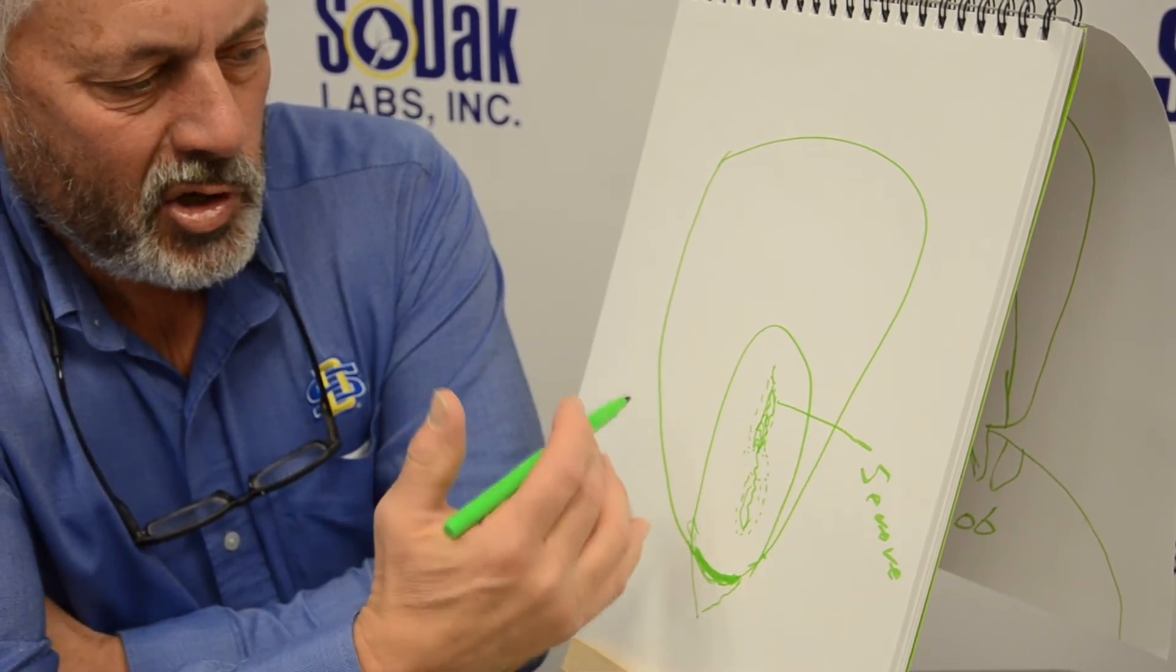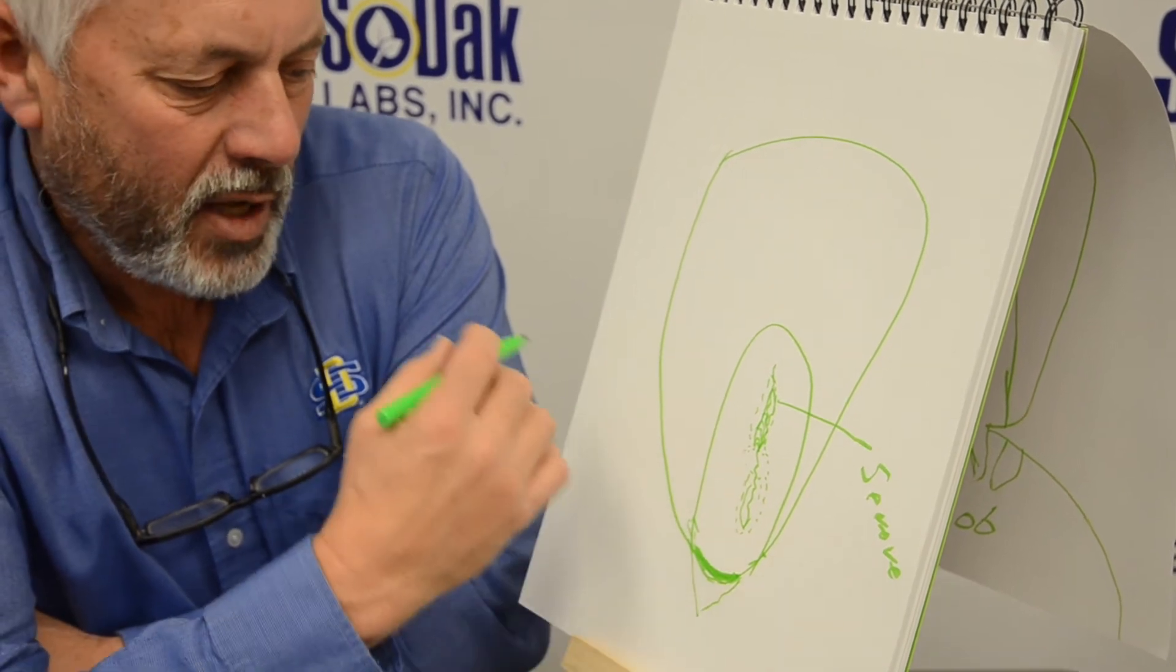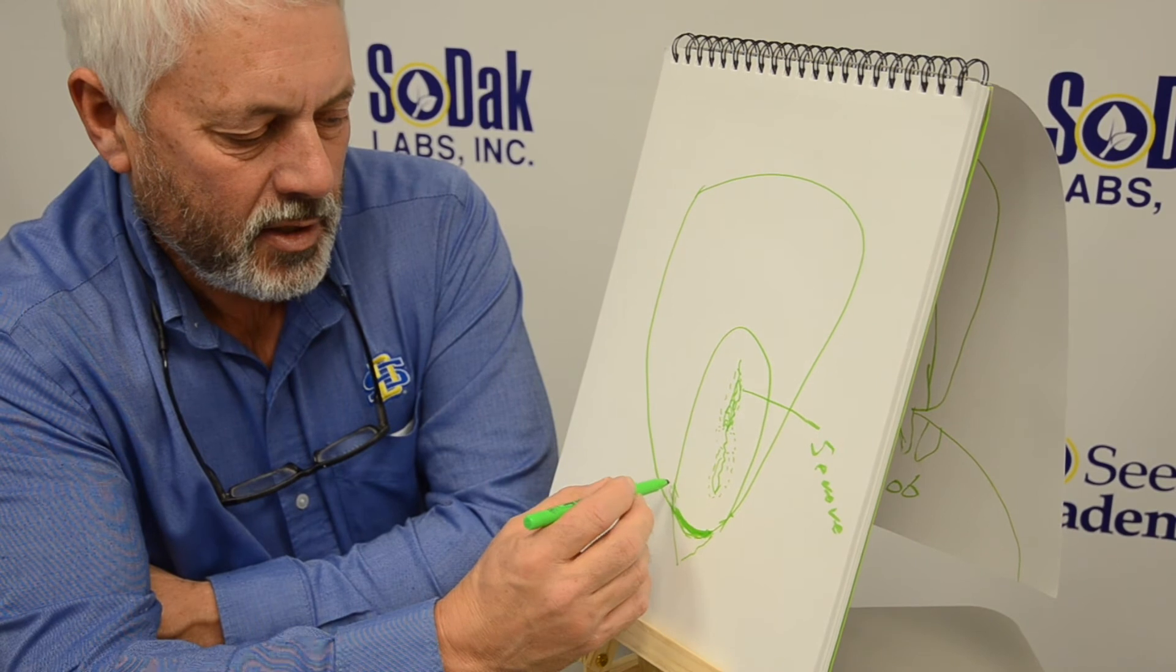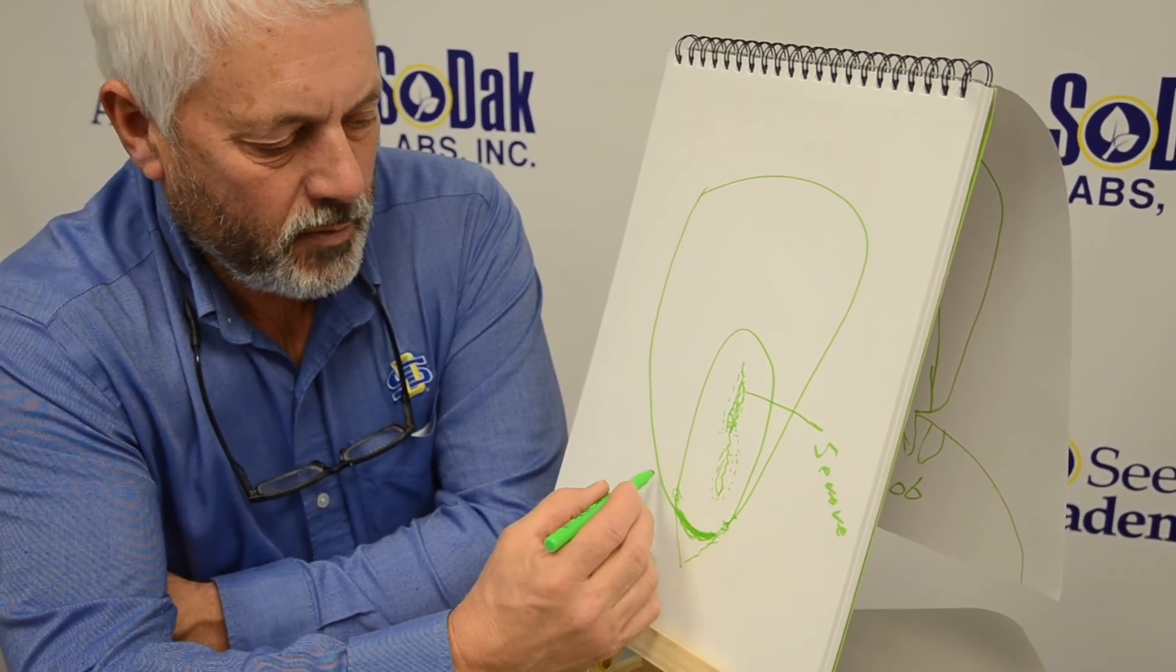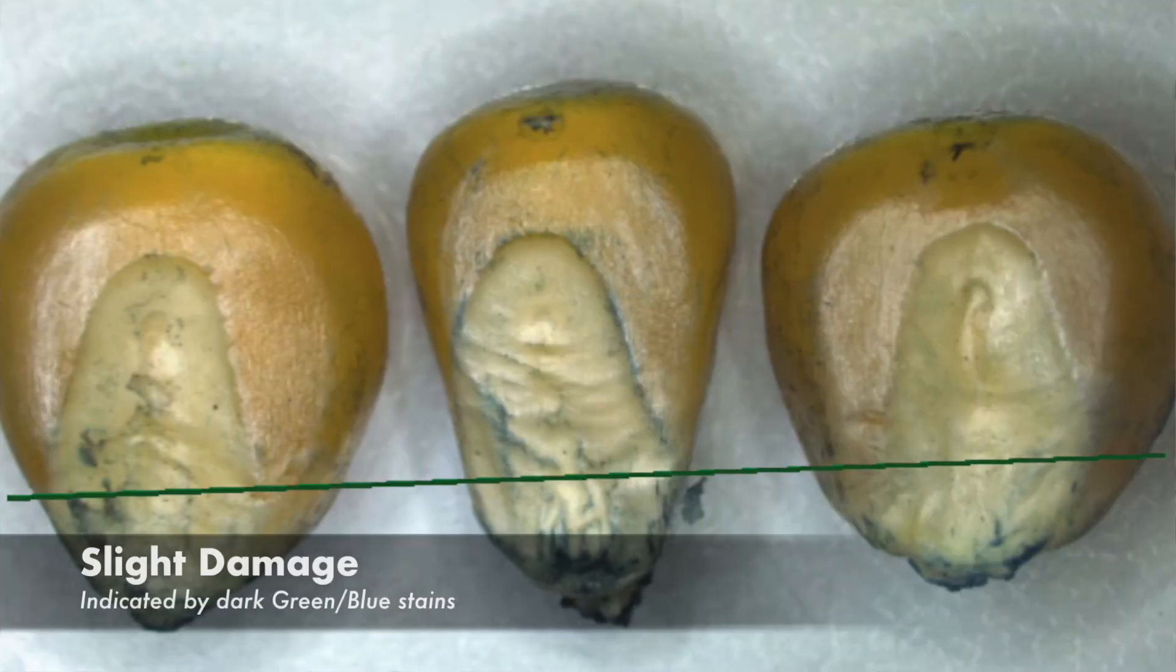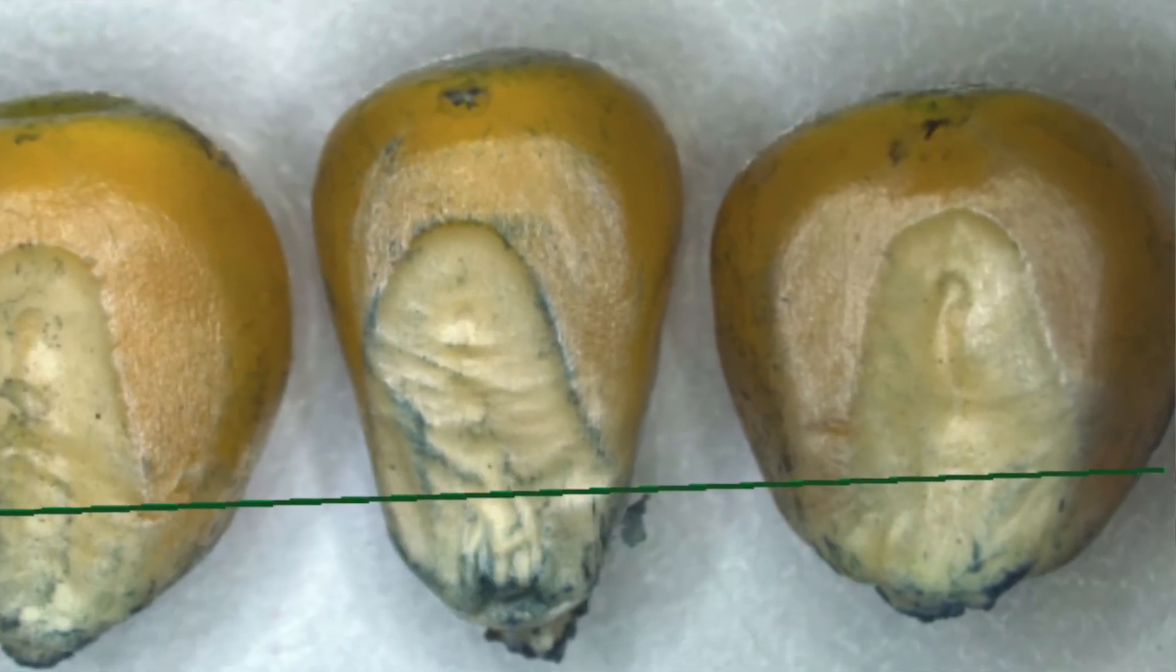If we tear the kernels out of the cob, say the cob is still a little wet and we have to tear them out, they don't shell out nicely. Sometimes we get tearing right here, and if it's in the very lower part of the germ face, like right here, we call this slight.